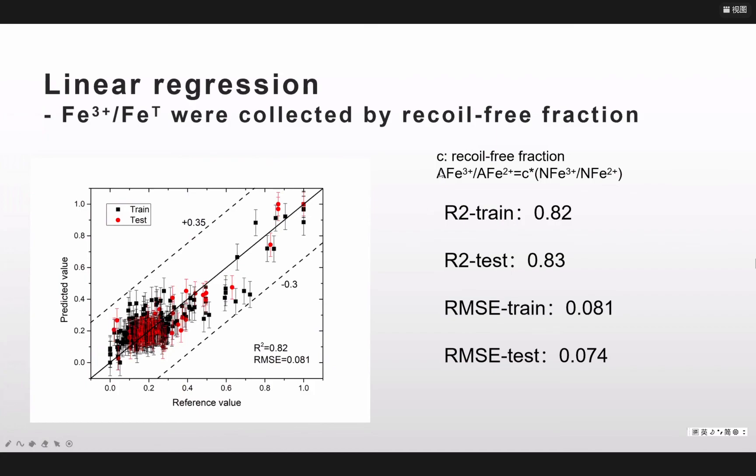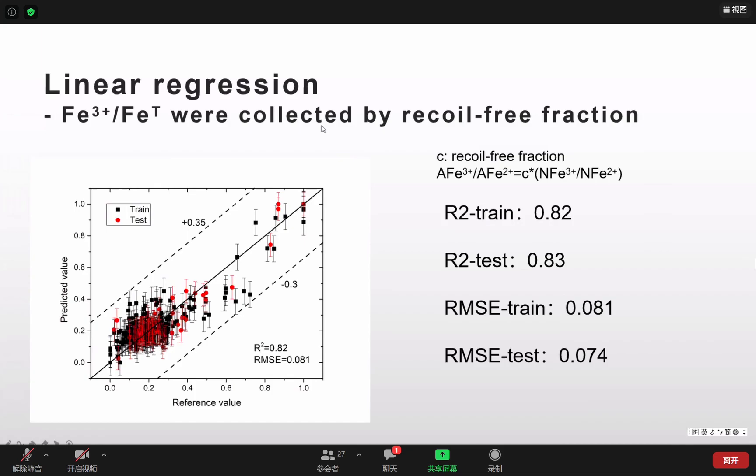We can see this. The A means the area. The Mossbauer is a spectra. People always calculate the contents or the rate of the ferric ions by the rate of the area of the spectra. If we want to get the real value of the rate, we have to multiply by the recoil-free fraction. That's the C in this formula. We can see after we consider the recoil-free fraction, we get a much better result.